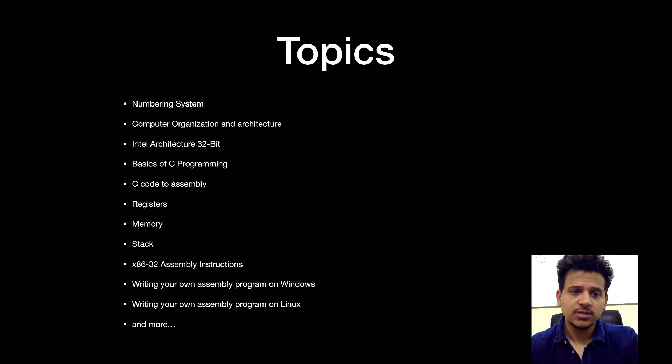These are the topics we are going to cover. We start with the numbering systems, then computer organization and architectures, then we look at the architecture for 32-bit systems on an Intel processor, then we look at basics of C programming. Then we will convert C code to assembly language, then we will move on to the registers, memory, we will understand how the stack works, then different instructions on x86 32-bit assembly language. Then we will write our own assembly code on Windows as well as Linux format.